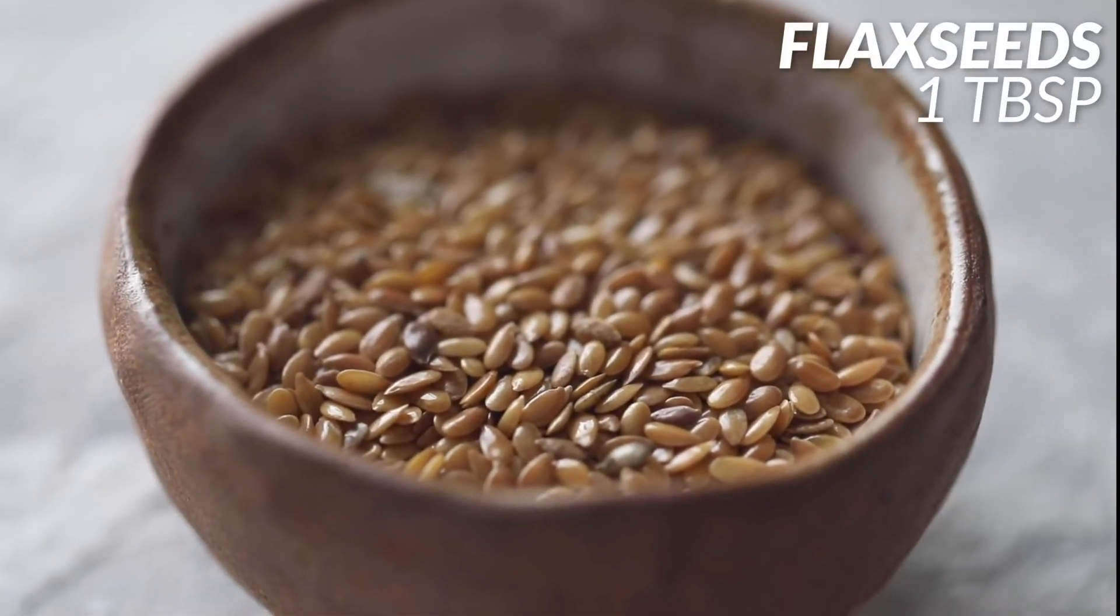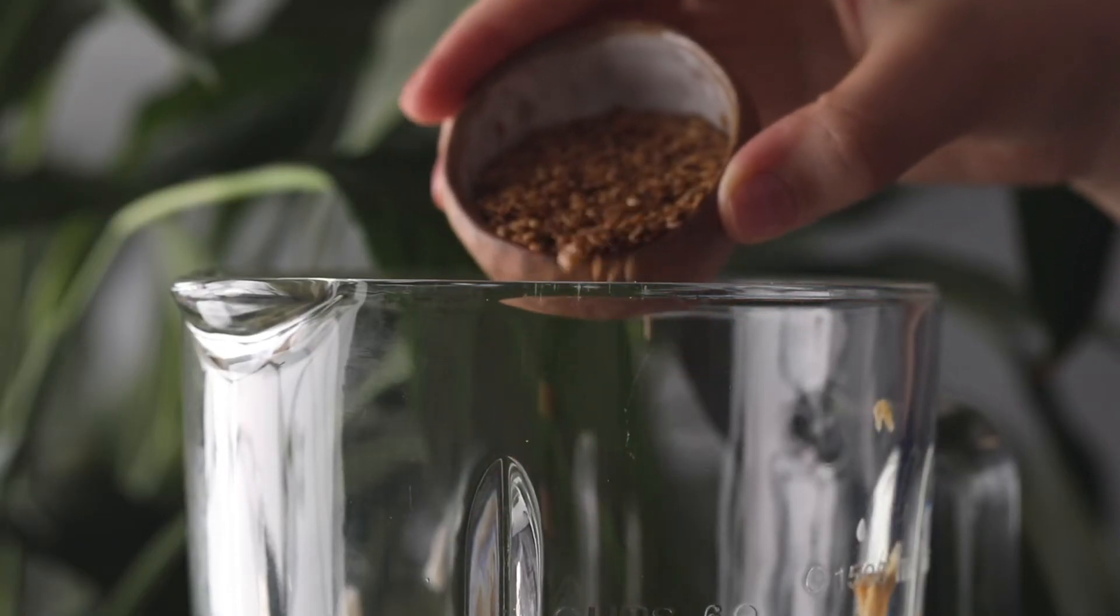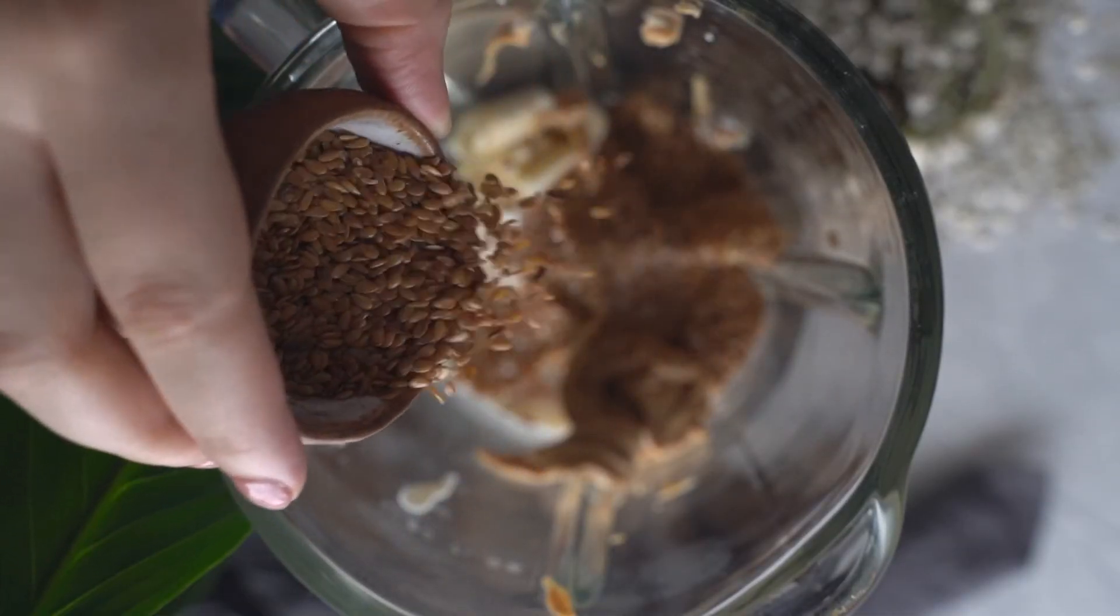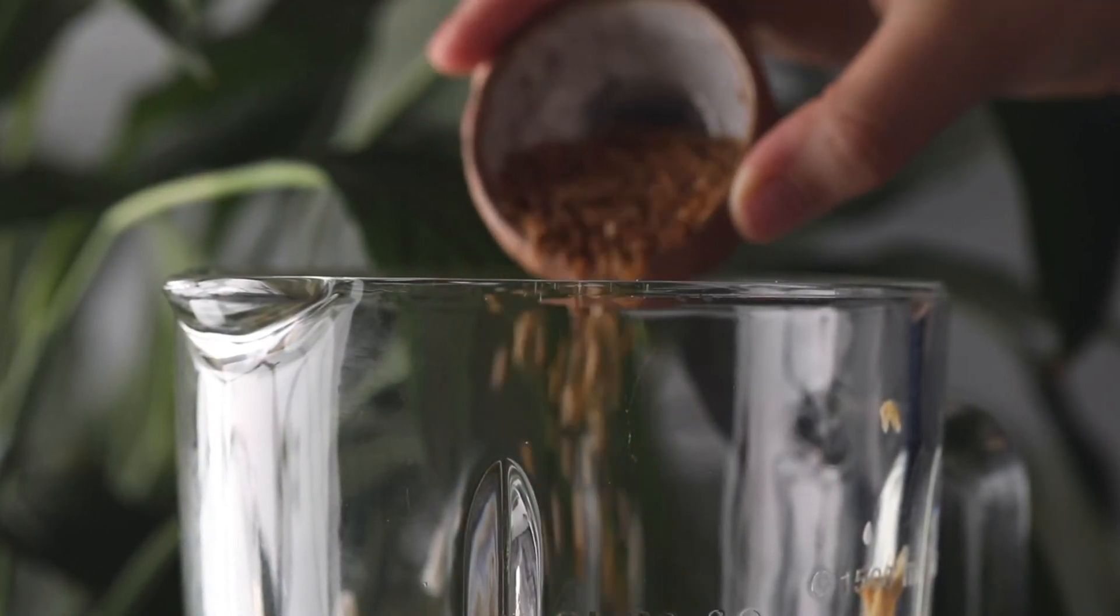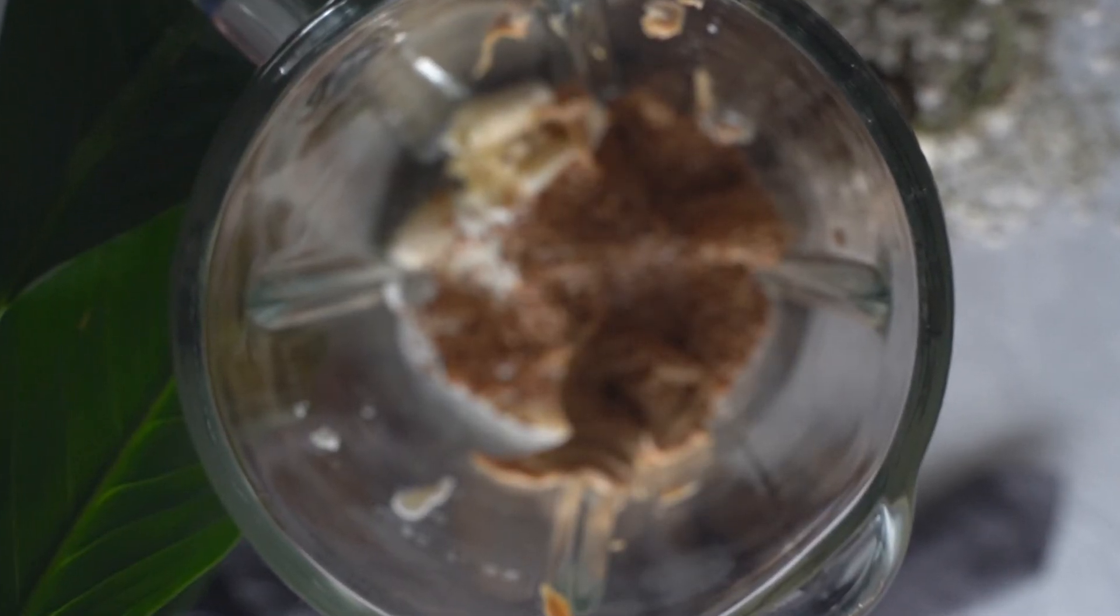Add one tablespoon of flaxseeds. Flaxseeds are really a superfood—they're full of fiber, protein, healthy fats, iron, calcium, magnesium, and vitamin B6. It's definitely one of those ingredients you want to add into your smoothies.